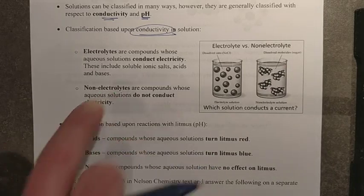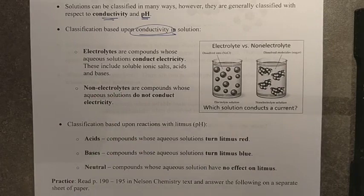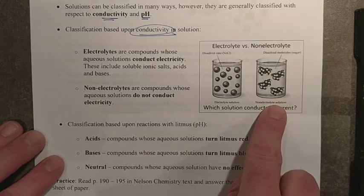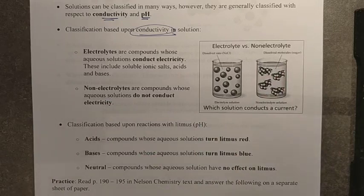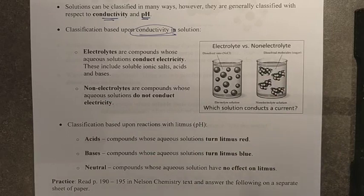If it doesn't, it's classified as a non-electrolyte. All right. And so while we can certainly dissolve things, it may not produce ions in solution, which would impede its ability to move electrons from one place to another through the solution.